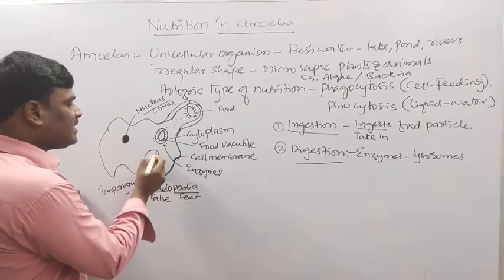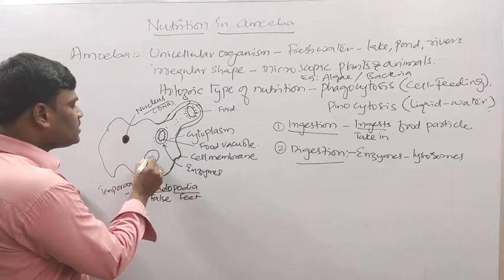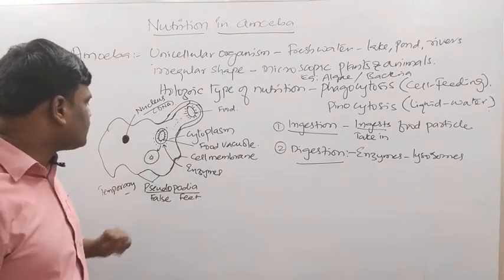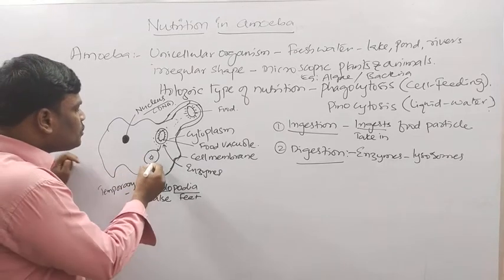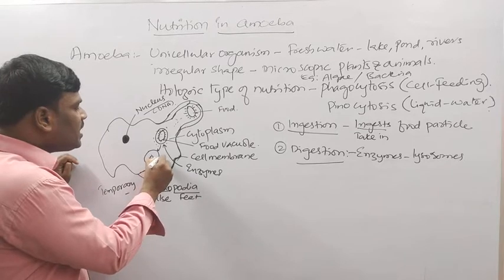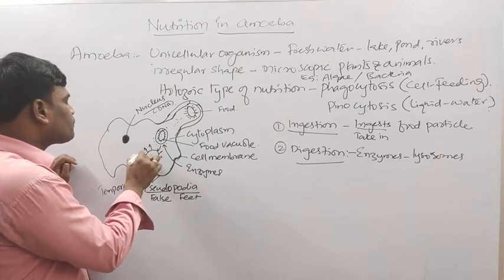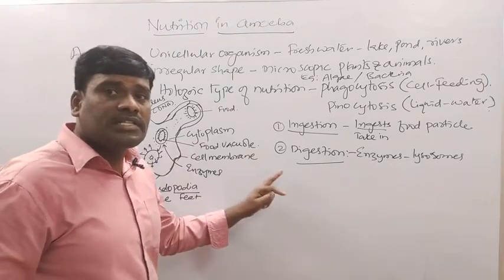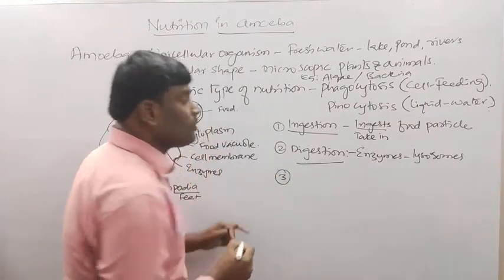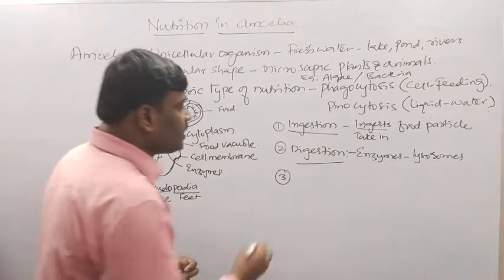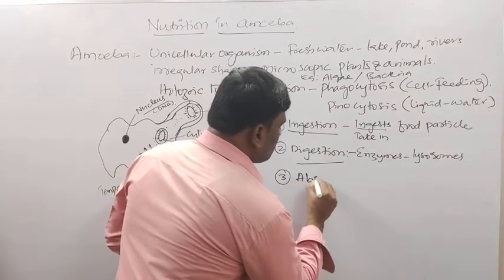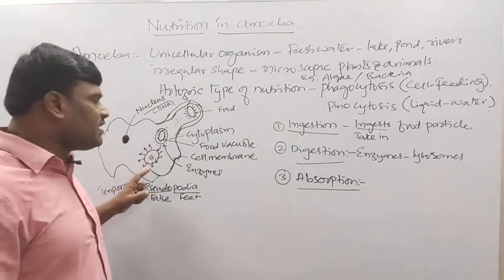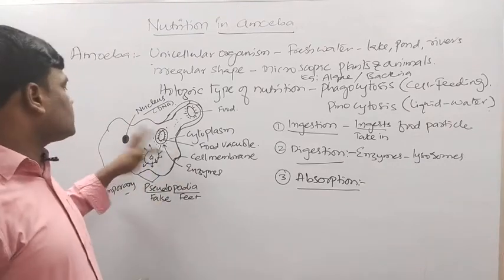After the food gets digested, the bacteria-like particle becomes smaller because most of it has been digested. The digested particles are then absorbed by the cytoplasm. The third step in the nutrition of amoeba is absorption — after the food vacuole gets digested, it will be absorbed into the cytoplasm.